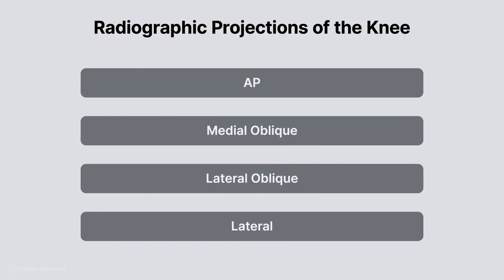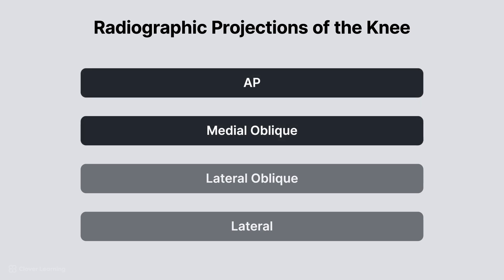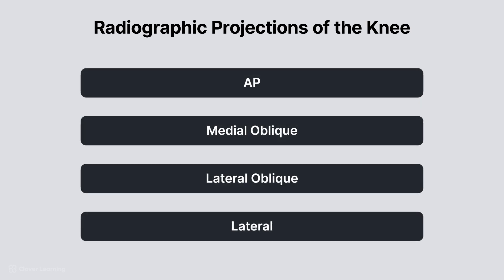As a reminder, the routine radiographic projections of the knee are AP, medial oblique, lateral oblique, and lateral.